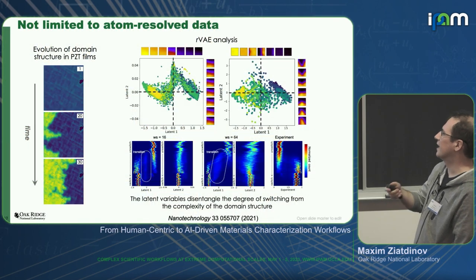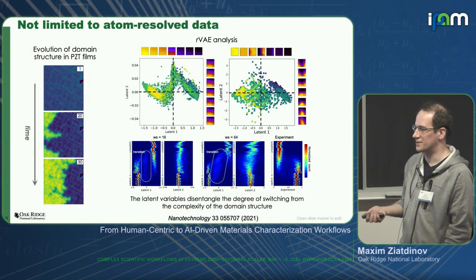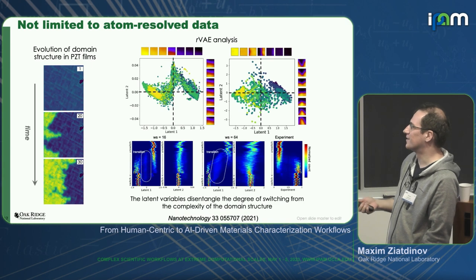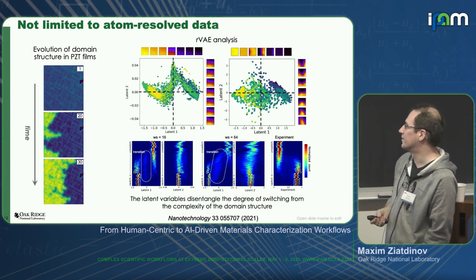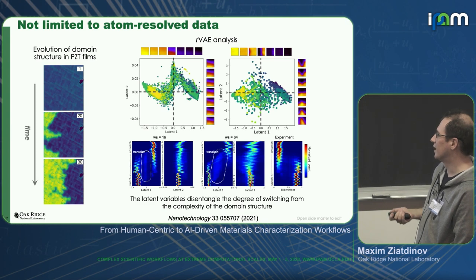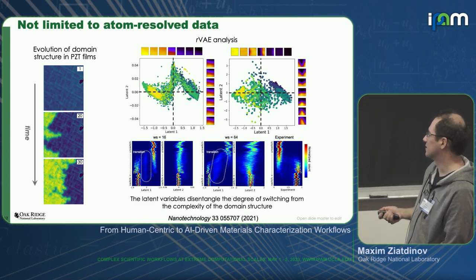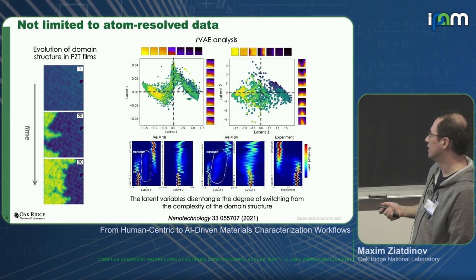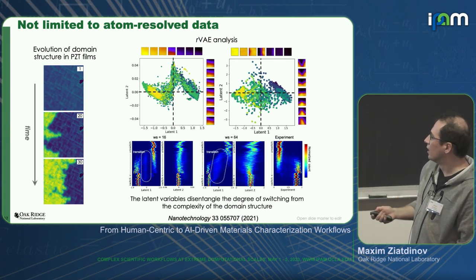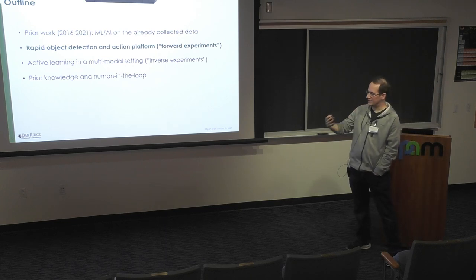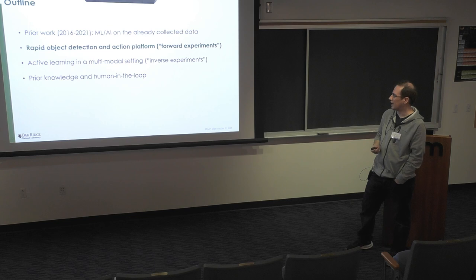I like to talk about atom-resolved data — atomically-resolved microscopy is pretty much what got me into science. But everything I describe is not limited to atom-resolved data; you can apply similar methods at the nanoscale and microscale. Here's another example where we were able to analyze ferroelectric switching behavior using the same techniques and connect discovered latent variables to an order parameter in that system. We saw that machine learning has huge potential for bringing new insights into our standard analysis workflows.